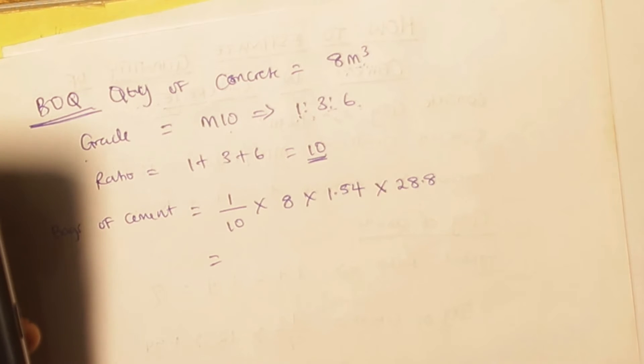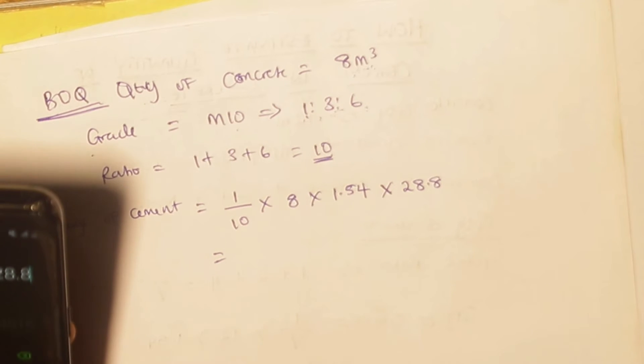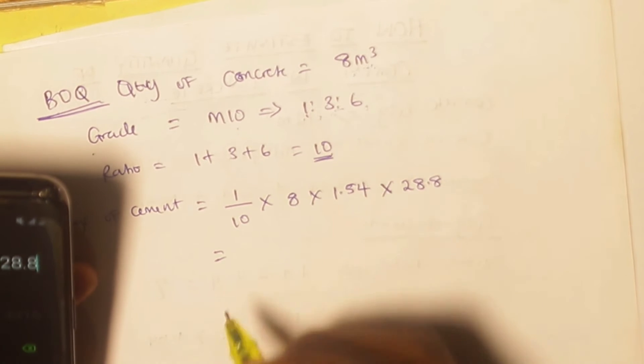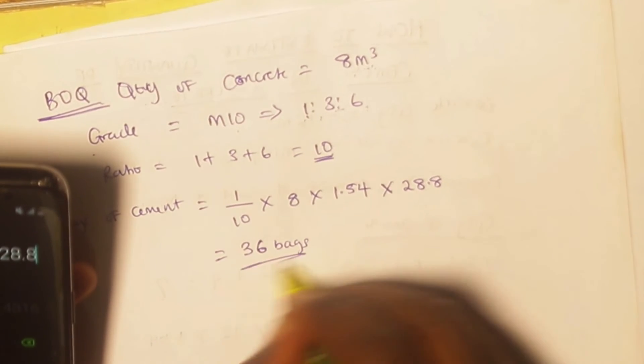Multiply by 28.8, which is going to give me 35.48. I'm going to round it up to 36 bags.